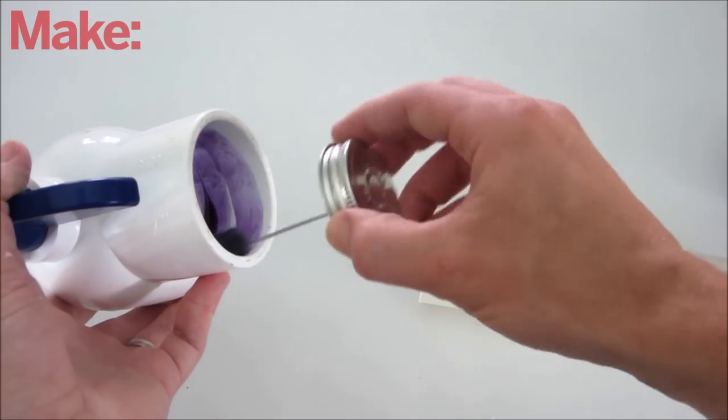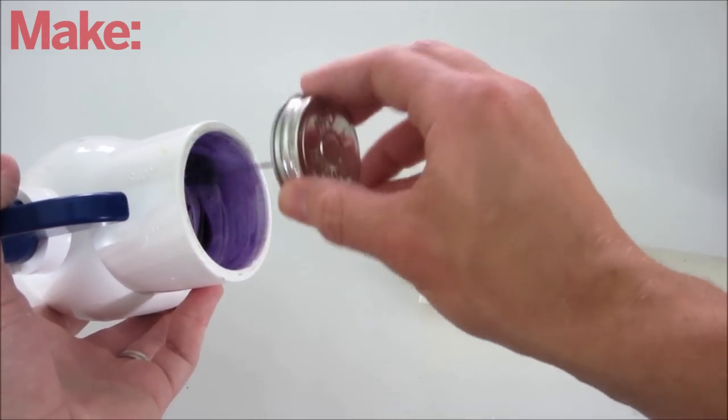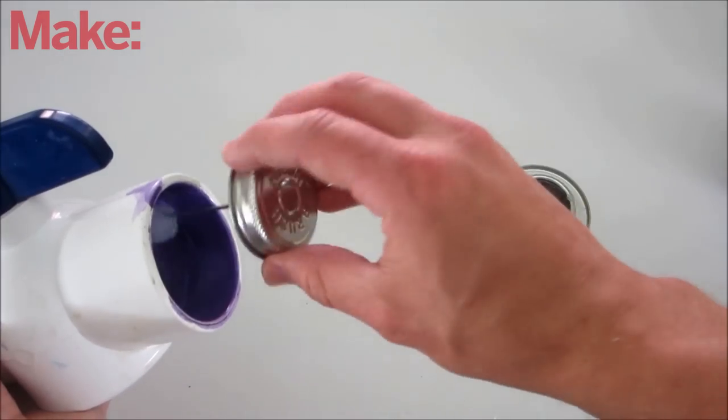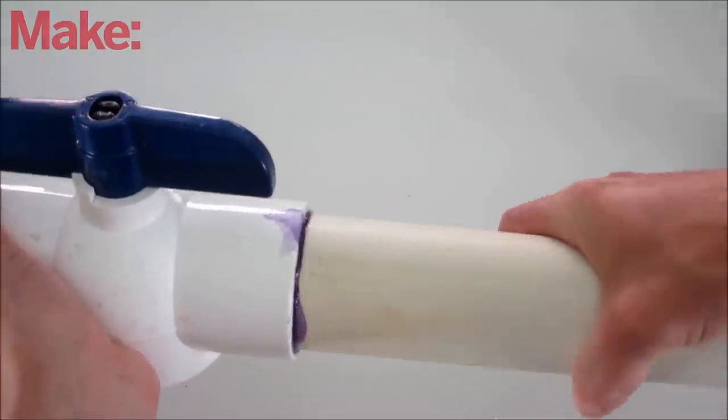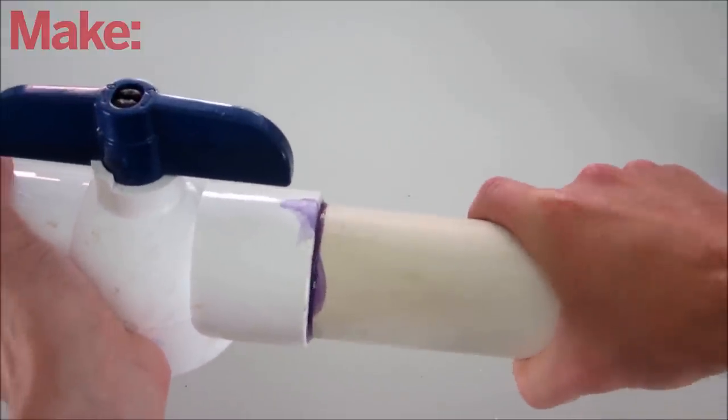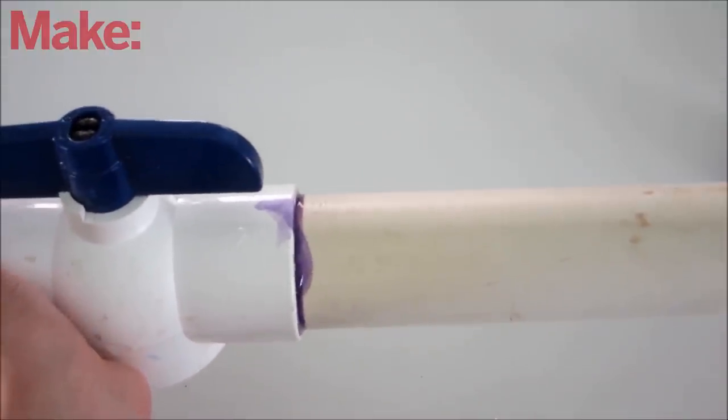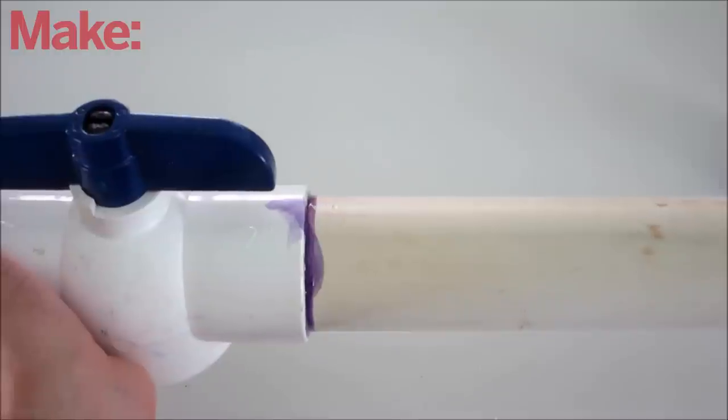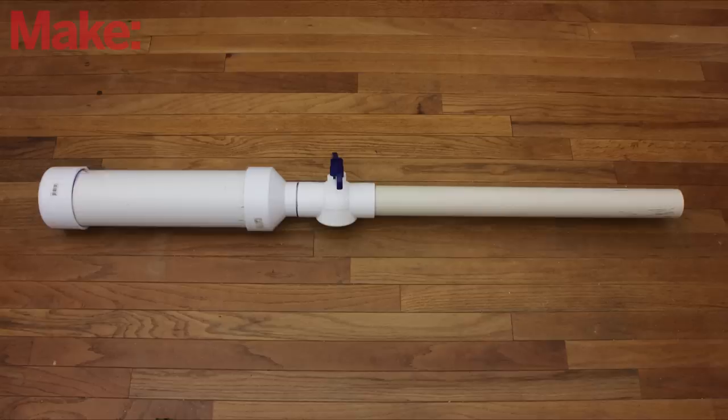On each of the connecting surfaces, first apply a coat of purple PVC primer, then apply a layer of PVC cement. Press the pieces together firmly and turn them a quarter turn. Hold them together for at least 30 seconds. Do this for all the connecting surfaces. Let them sit until the cement is fully cured.